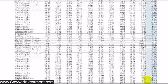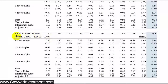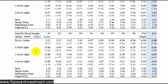Panel B shows the same phenomenon in the global sample: as quality increases, excess returns over T-bills increase, and so do the alphas after controlling for each of the factors in these models. This tells us there is some factor — other than market, size, momentum, or value — explaining these returns, and that factor is likely company quality.